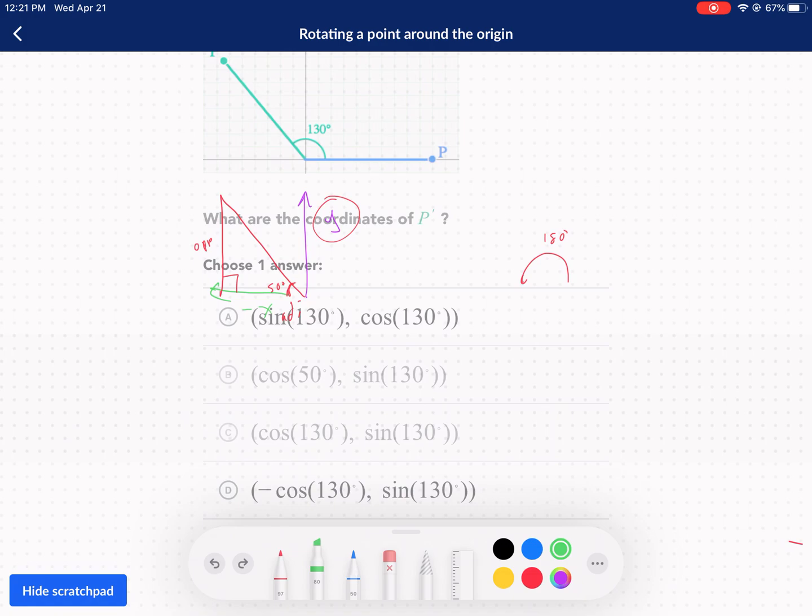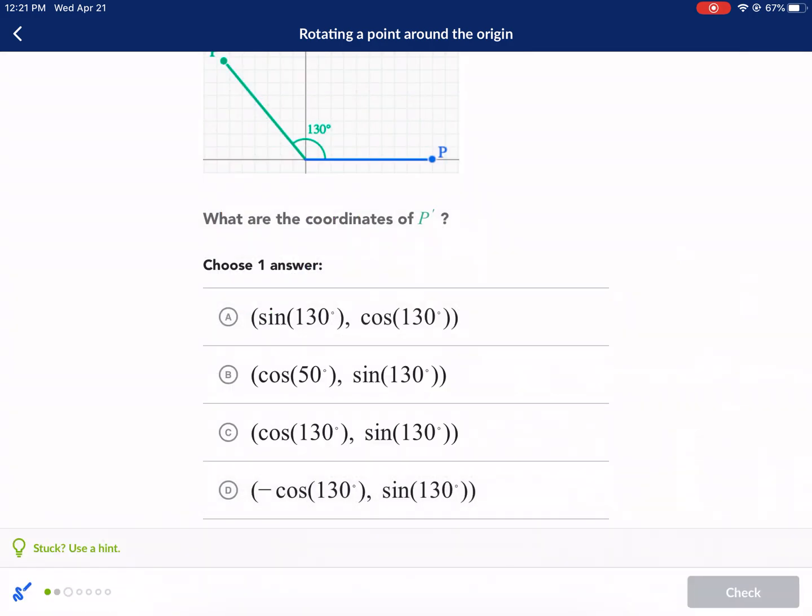So cosine of 130 is negative already. We don't have to worry about that too much. And then we're going to use the sine of 130 for our y coordinate. So sine is corresponding to the y coordinate. Cosine with the x coordinate. Sine is already positive in this quadrant 2. Cosine is negative in quadrant 2. So it's going to be C.